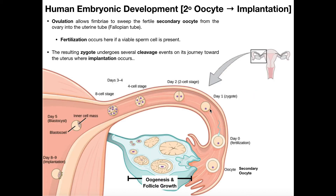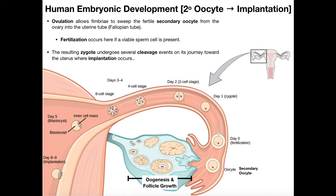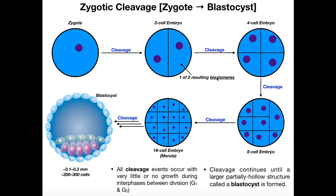Going back to what we see in the fallopian tube: one cleavage event gives us the two-cell stage. Then each daughter cell divides and we go from a two-cell stage to a four-cell stage, then an eight-cell stage. Starting with the zygote, the first cleavage event gives us the two-cell embryo. At this point, this mass of cells is called an embryo — this is embryonic development, which occurs from fertilization all the way through implantation. These embryonic cells are each called blastomeres.